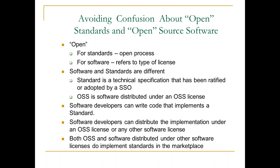Software and standards are also typically different in other ways. A standard is really a description of required features or elements that enable interoperability or compatibility, which can be implemented in any number of different ways by different vendors. Open source software is just software distributed under an open source license. Standards can be implemented in software — some developers may distribute that implementation under an open source license while others might choose a proprietary or commercial license. So we see implementations of standards under both open source and other license types in the marketplace.